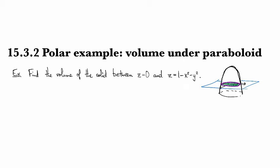Okay, so let's look at an example, another example of how to do a computation of a double integral set up in polar coordinates. For this one we're going to find the volume of the solid between the plane z equals zero, so the xy plane, and the surface z equals one minus x squared minus y squared, which, as you may have noticed from the title, is a paraboloid.